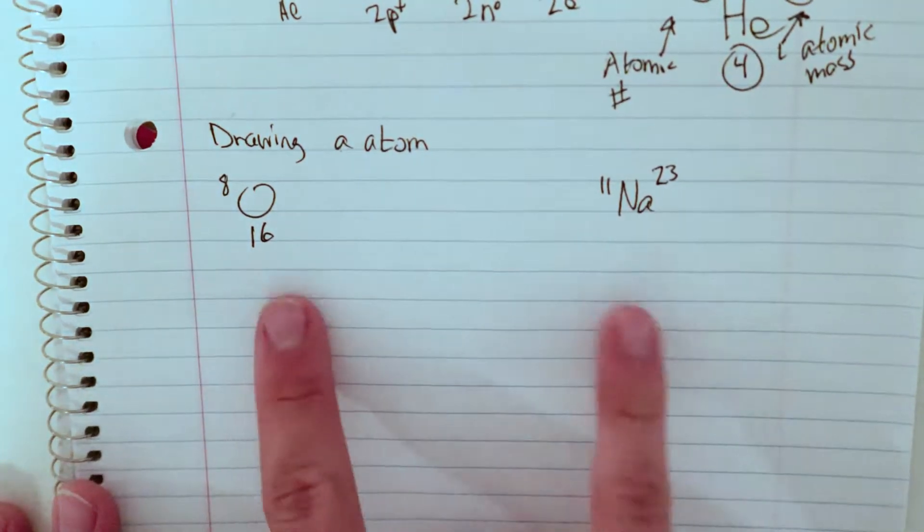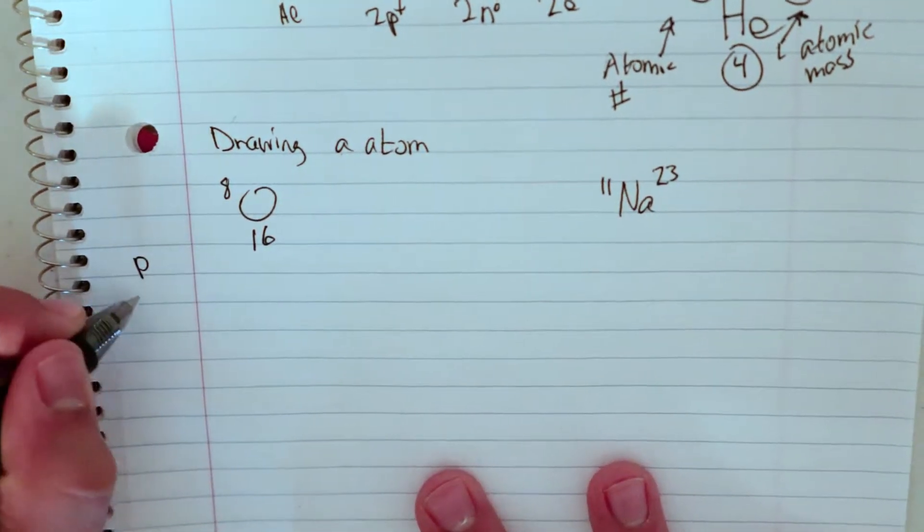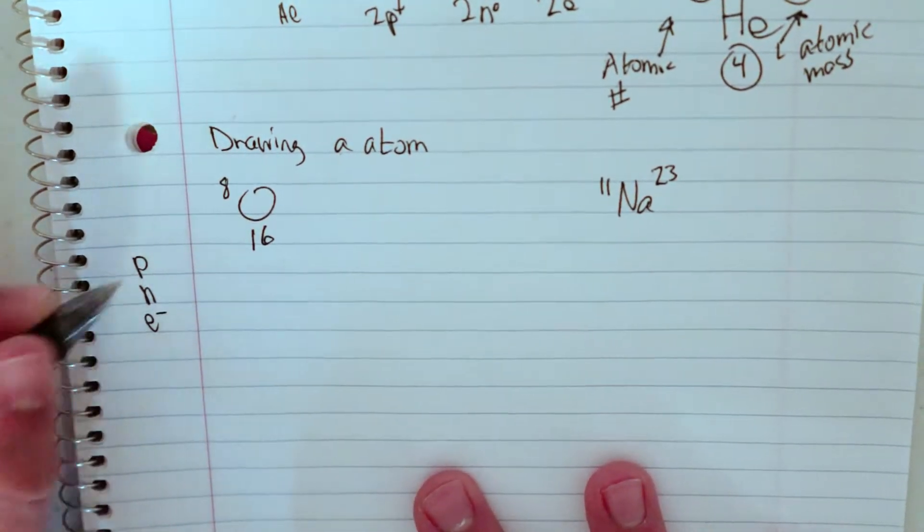So from these numbers, how am I going to do this? First to draw the atom, I want to know how many protons do I have, how many neutrons do I have, and how many electrons do I have?